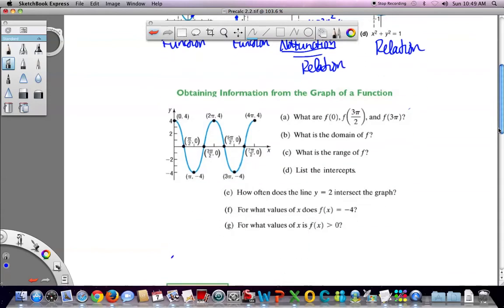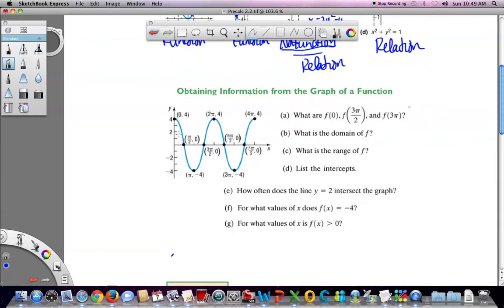Obtaining information from the graph of a function. What is f of zero? Well at zero, the function is worth four. It tells you that right here. What is f of 3π/2? 3π/2 would be zero. And what is f of 3π? 3π is right here. 3π is negative four. So they're looking for the y value. So this question is asking you for the y values at the given x. Anybody remember what kind of shape this is from a long time ago?